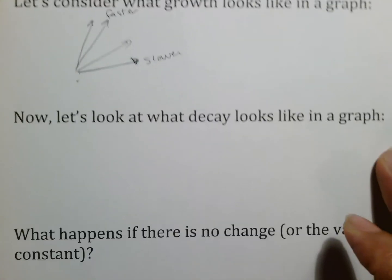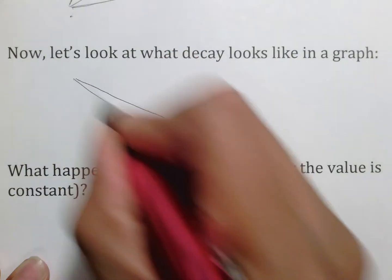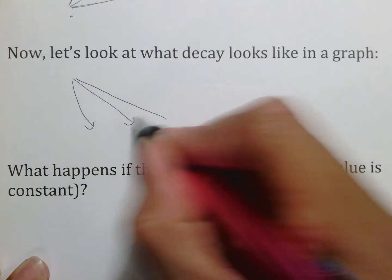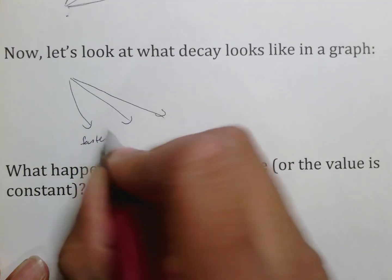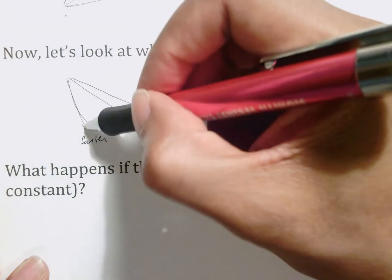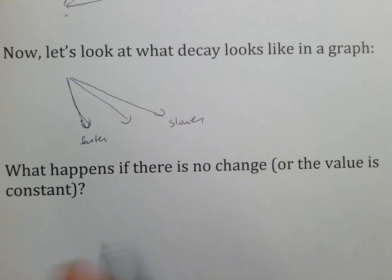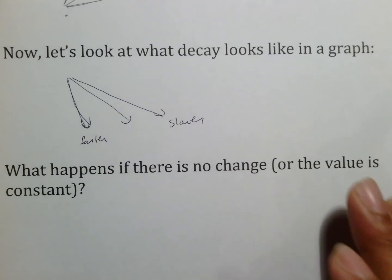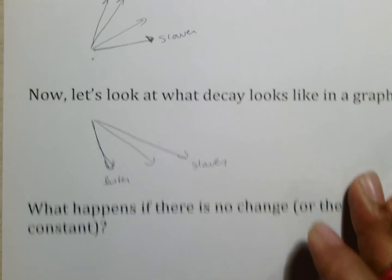In terms of decay, it's pretty similar. Those should be lines that are going downward. And the more steep, this is a faster decay because notice how fast it goes down. This is a slower decay because notice how long it takes for it to get there. So those are your growth going up, decay going down. The more steep the line, the faster it's moving.